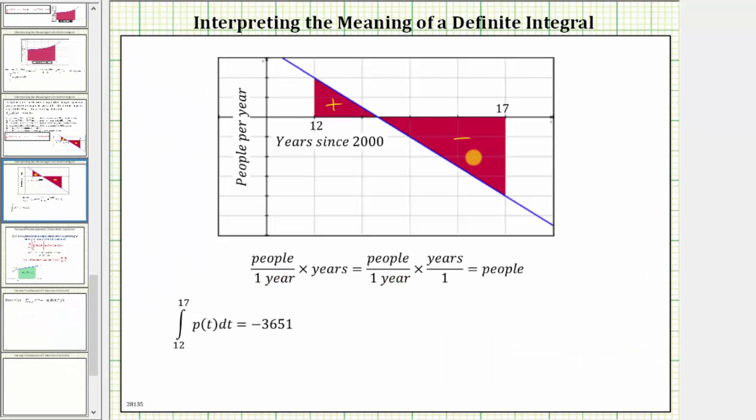We know geometrically, to find the area, we would have to multiply the units on the vertical axis by the units on the horizontal axis. And therefore, we would have people per year times years. If we write years as a fraction with the denominator of one, we can see the units of years simplifies out, leaving us with the units of people, which means this negative 3,651 would have the units of people.